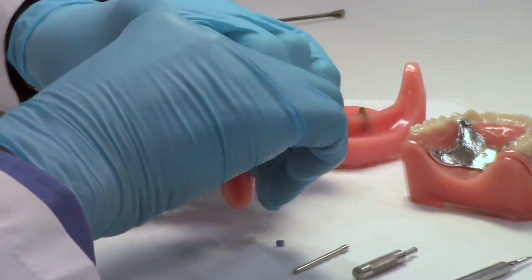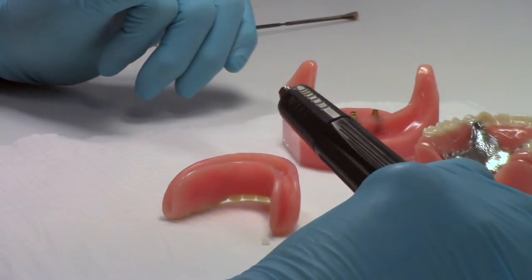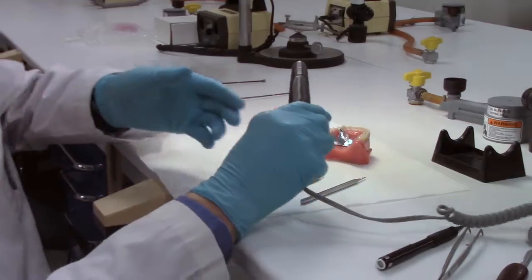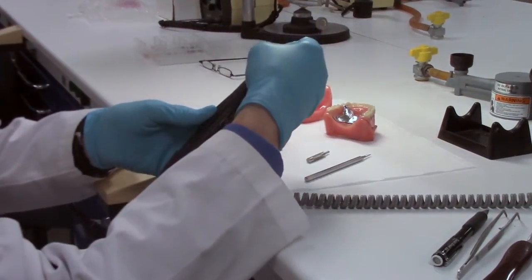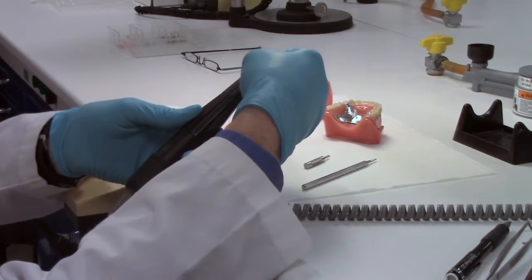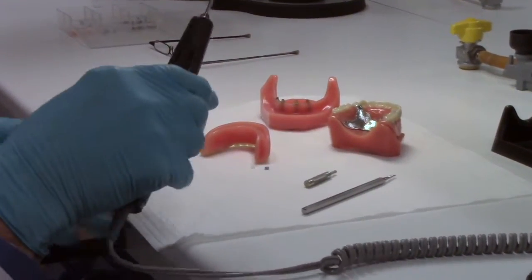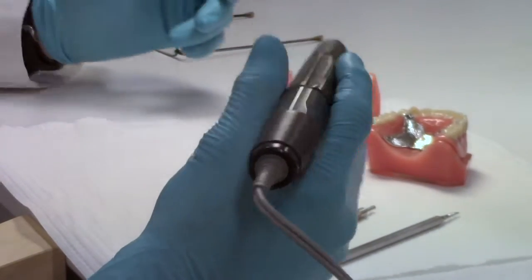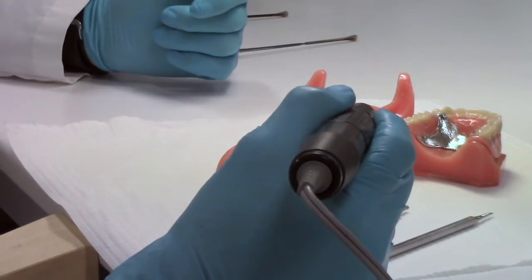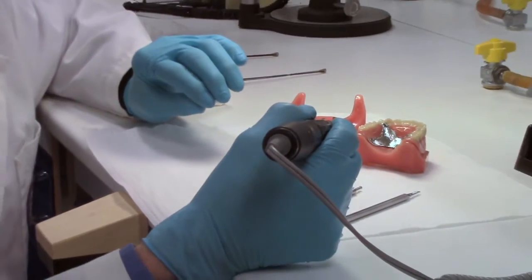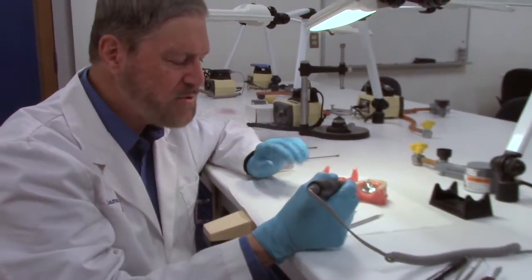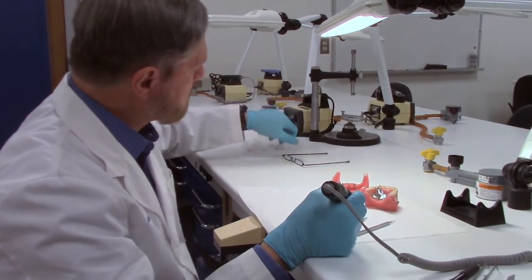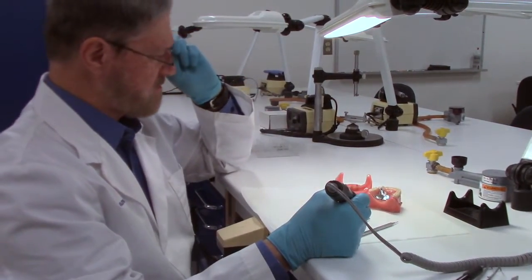So let's take the overdenture. You'll need a straight laboratory style hand piece. And we're going to put the core cutter bur in and tighten that. Now I like to hold it kind of like a pencil. I'm going to put my glasses on so I can see what I'm doing.